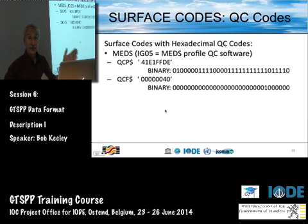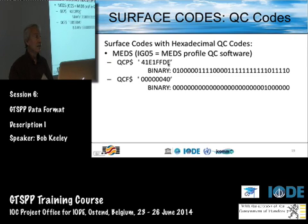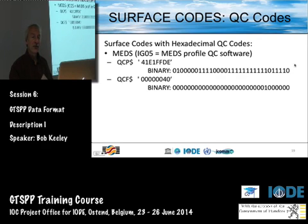Essentially it's a 32-bit field where you set a 1 for every test that's performed. When you convert to hexadecimal, you convert 4 bits at a time. So 1110 converts to an E — that's the number 14 in binary. The next group, 1101, is D. You count from the right-hand side to the left because that's how bits are ordered in a computer word.